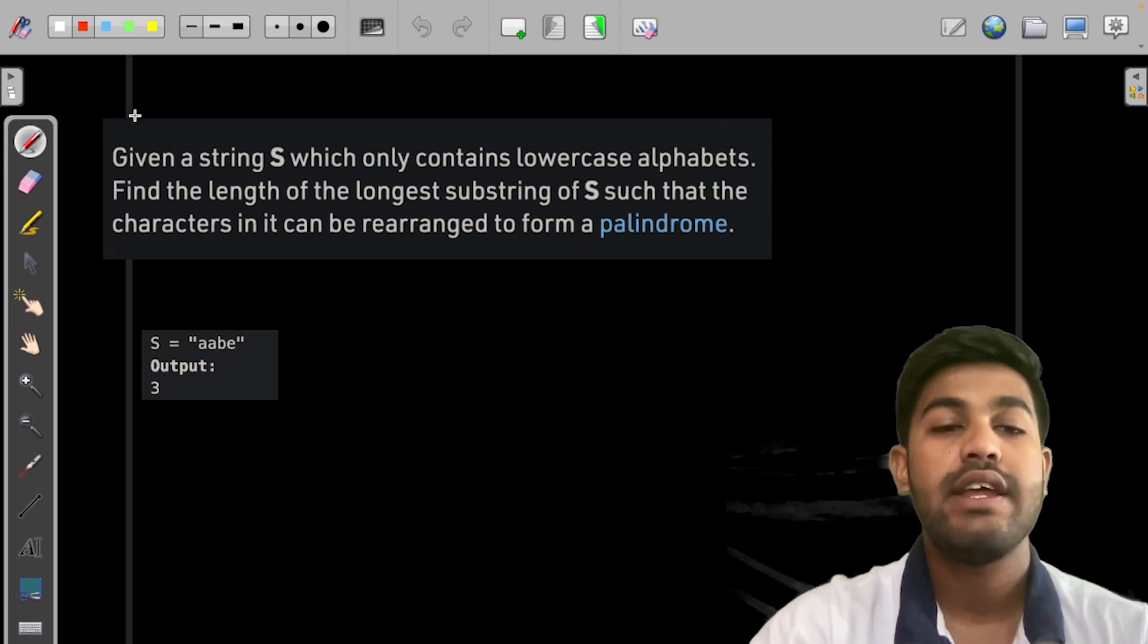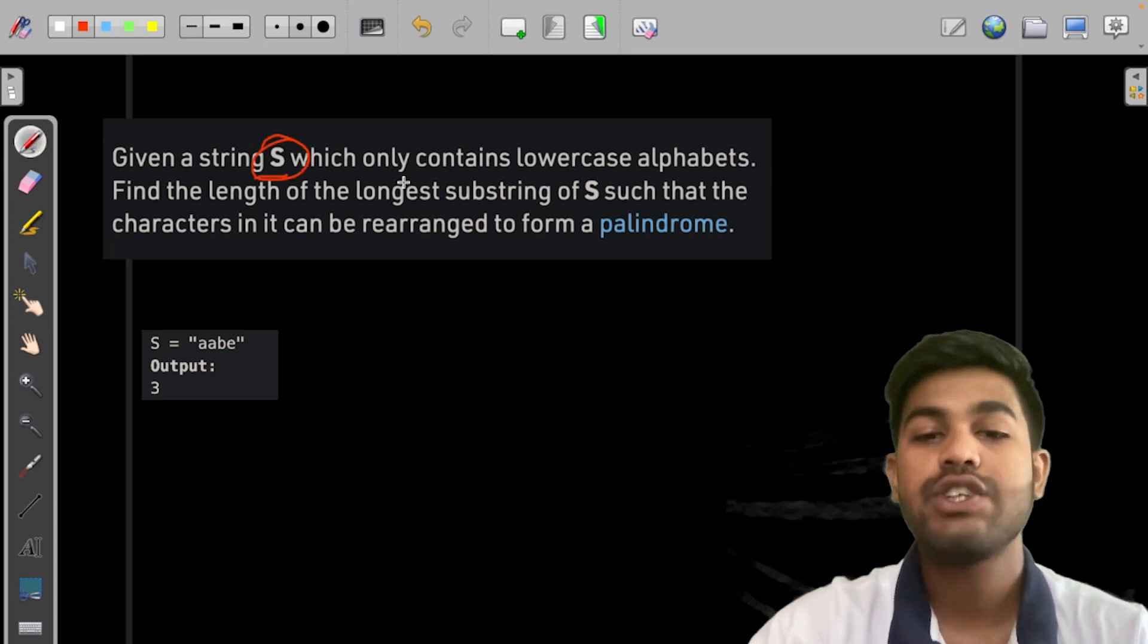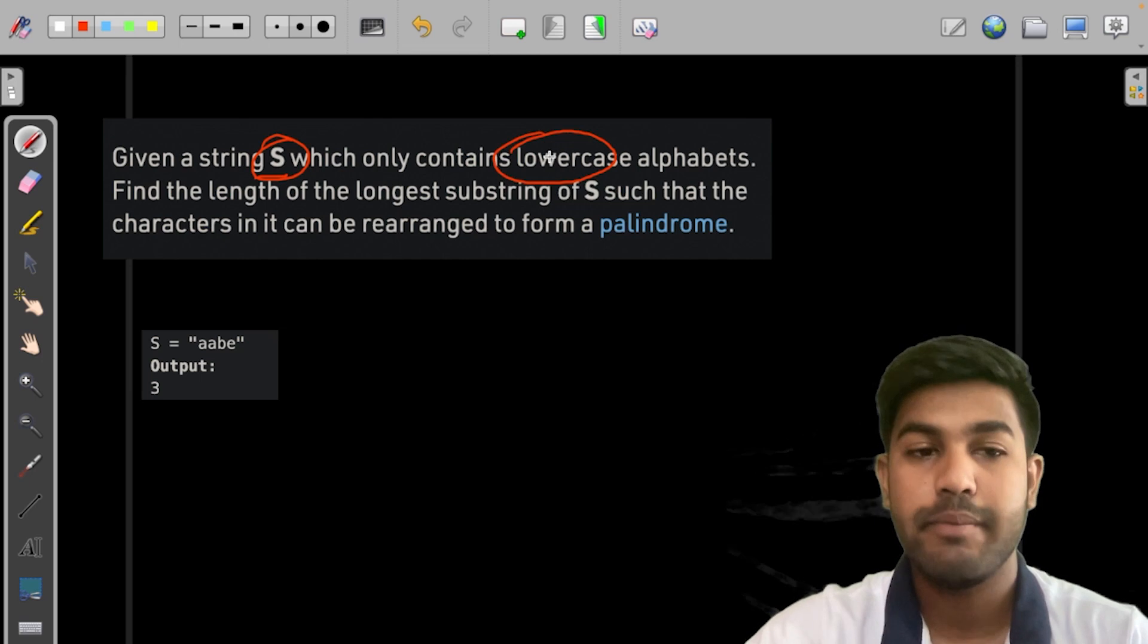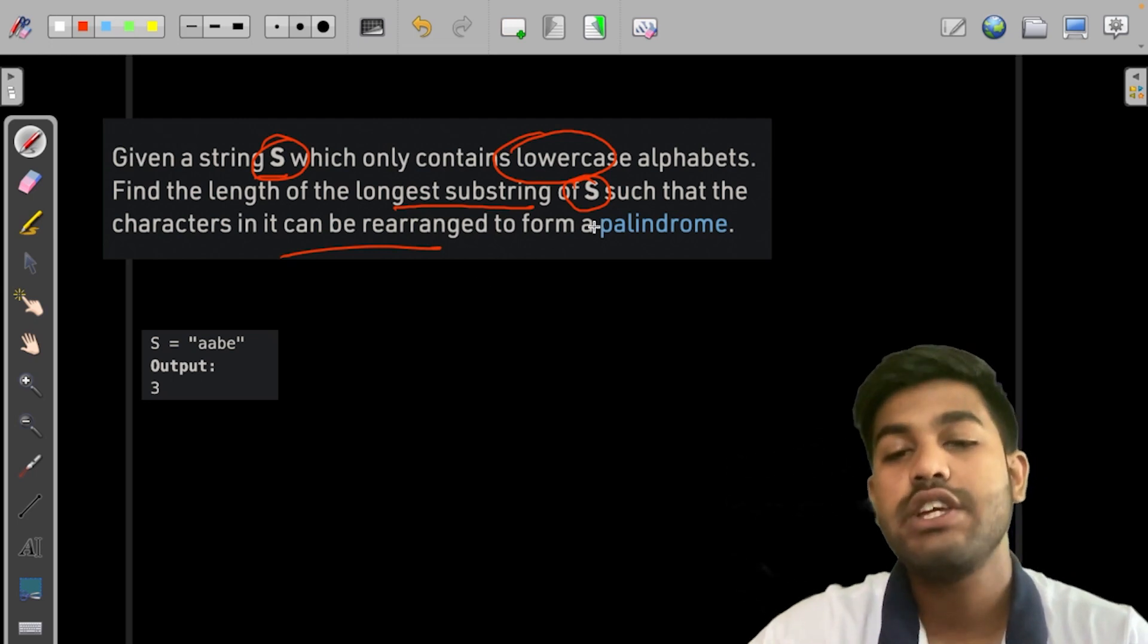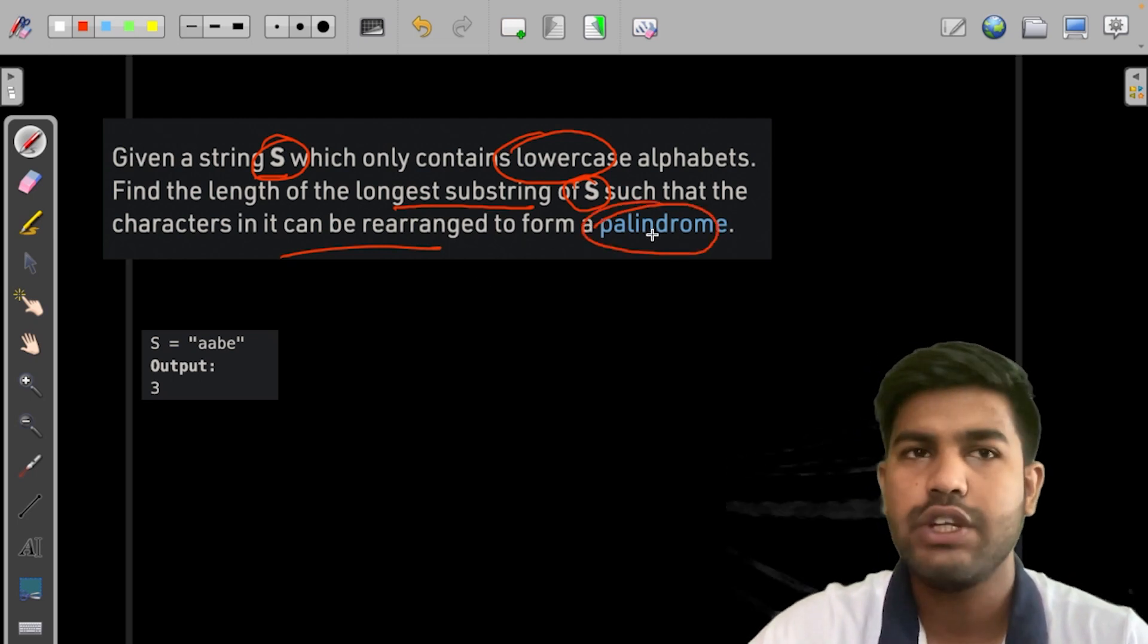In this problem we are given a string S which contains only lowercase alphabets and we need to find the longest substring of S such that the characters can be rearranged to form a palindrome. This is what you need to do.